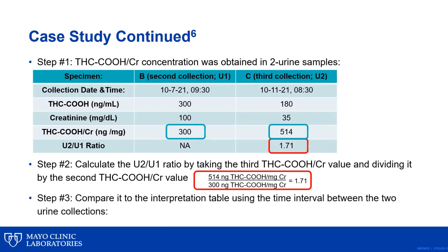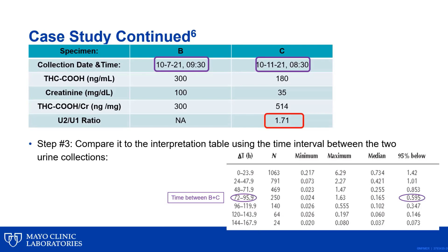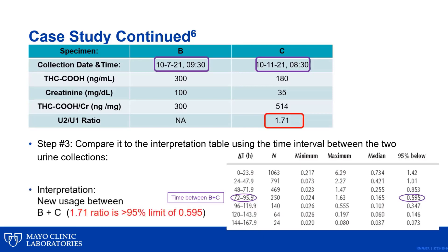Step three is to compare this decision ratio to the interpretation table using the time interval between the two urine collections and comparing it to the 95% below limits in the same table. We need to determine the time in hours between the third and second urine collections, which was 95 hours — just shy of four days — and falls between the 72 and 95.9 hours in the table. You then compare the decision ratio of 1.71 to the 95% below limits in the same row in this table, which is 0.595. Since the decision ratio of 1.71 is greater than the 95% below limit of 0.595, this indicates new usage between the two collection time points.